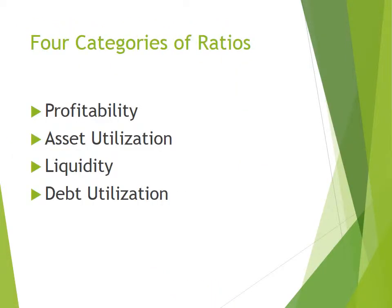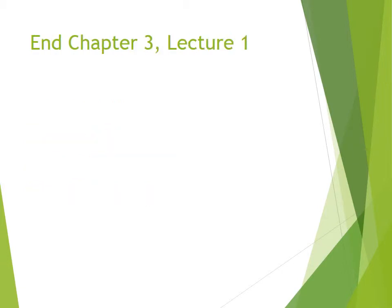There are really four categories of ratios that we'll look at in Lecture 2, and that is profitability ratios, asset utilization, liquidity, and debt utilization. That is the end of Chapter 3, Lecture 1. Please see OnCourse for Chapter 3, Lecture 2. Thank you.